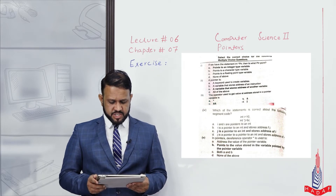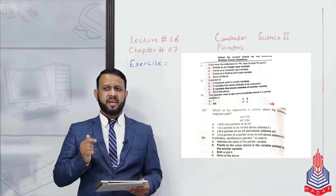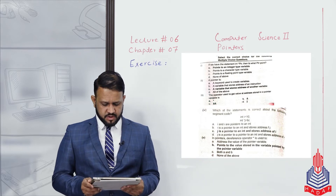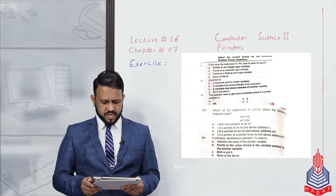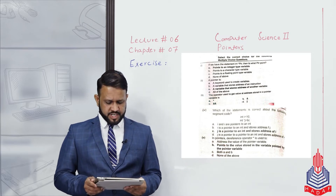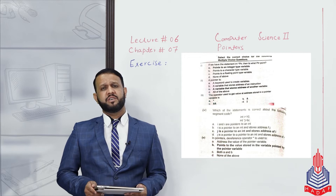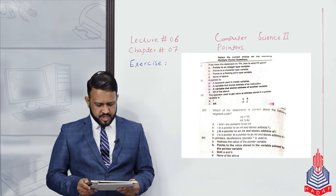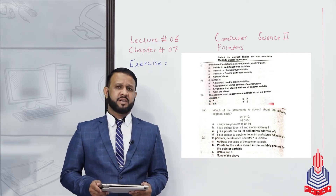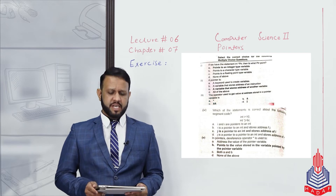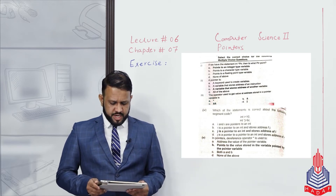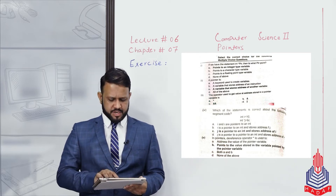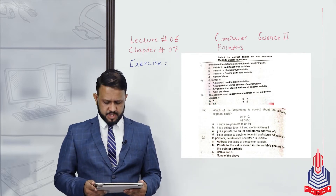The choices for this MCQ are: alpha — i and j are both pointers to an integer; beta — i is a pointer to an int and stores addresses of j; charlie — j is a pointer to int and stores addresses of i; delta — none of these. The correct answer is charlie: j is an integer type pointer and is storing the address of i.